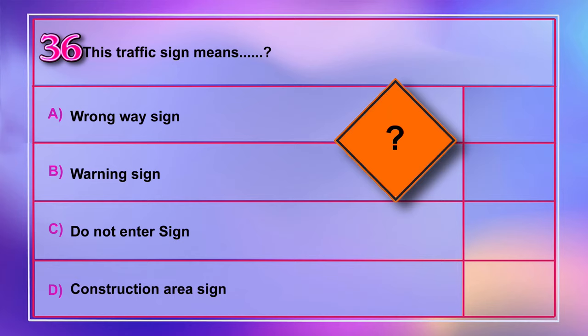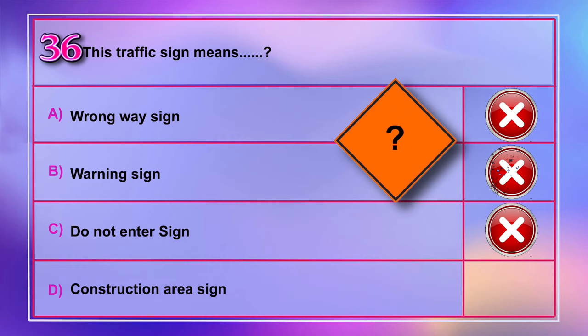Question number 36: This traffic sign means A) wrong way sign, B) warning sign, C) do not enter sign, D) construction area sign. Correct answer is D: construction area sign.